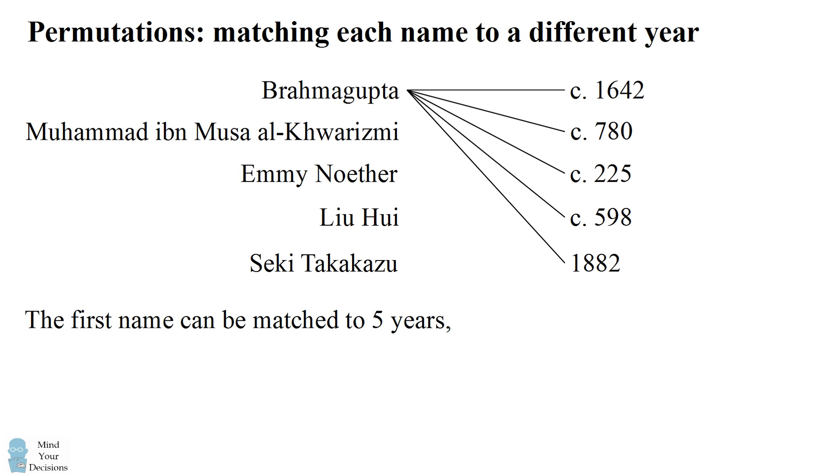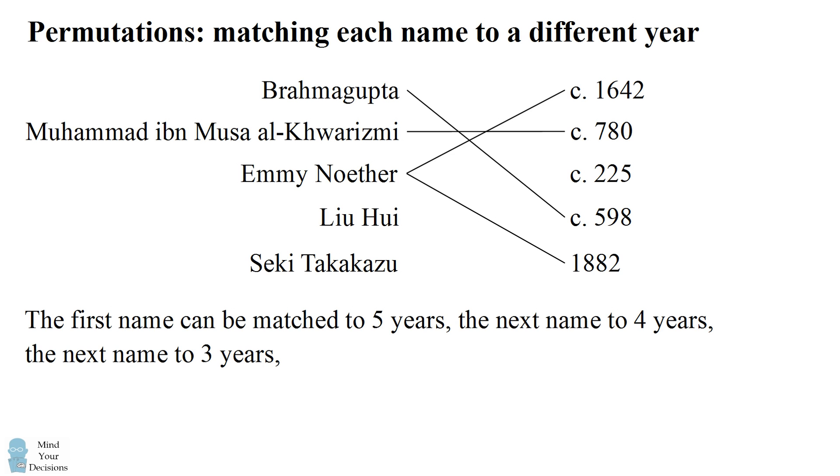The first name can be matched to any of five different years. One of these choices is going to be your guess. Now the next name can be matched to any of the four remaining choices. One of these is also going to be your guess. Now the next name will have a possibility of three different years. And once again, one of these is going to be your choice.